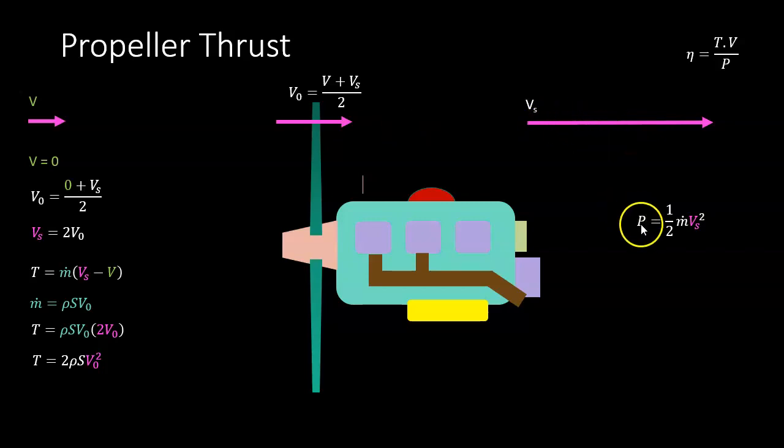If we assume all this power from the engine is being given to the air, we'd say that the power equals ½mVs². I've mixed up energy and power there, but energy is in joules, power is joules per second, and this mass flow is kilograms per second. We already saw that the mass flow is ρSV0, and Vs equals 2V0.